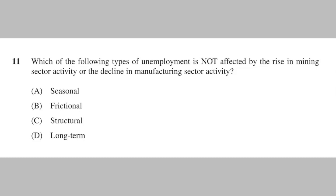Let's apply your understanding of these different types of unemployment to some HSC questions. 2013's question 11 asks which type of unemployment would not be affected by structural change. At a quick glance, this has nothing to do with seasonal unemployment, so the answer is A. Frictional unemployment would occur because some workers are going to spend time between jobs. Structural unemployment is clear because this example involves structural change causing some workers' skills to become obsolete. This may also lead to long-term unemployment due to hysteresis. This confirms that A is the correct answer.